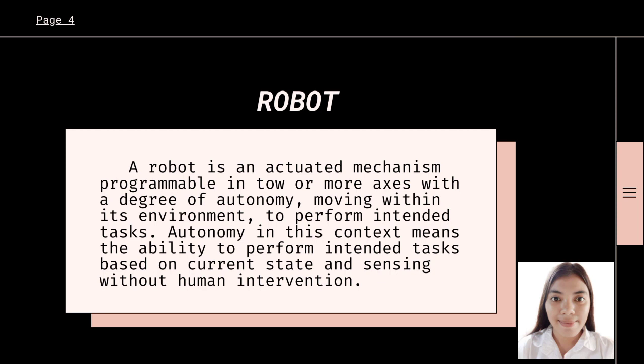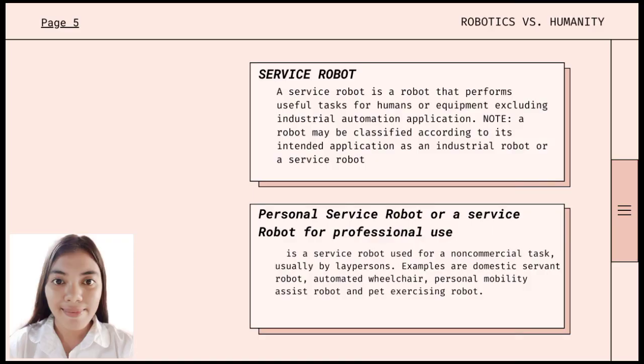What is a robot? A robot is an actuated mechanism programmable in two or more axes with a degree of autonomy, moving within its environment to perform intended tasks. Autonomy in this context means the ability to perform intended tasks based on current state and perception without human intervention. The robot, according to this definition, includes its control system as well as the interface with the environment and the user.